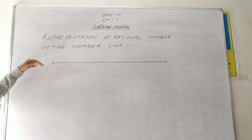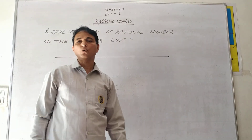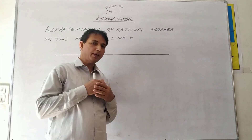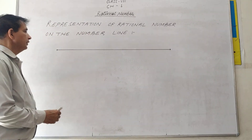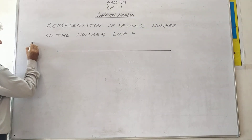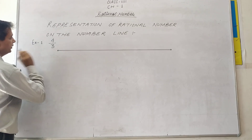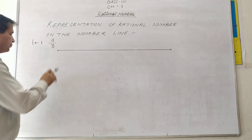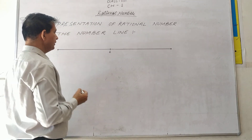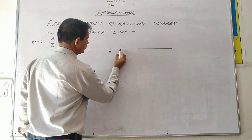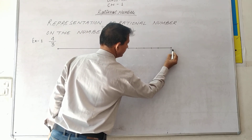Next topic: representation of rational numbers on the number line. You can show any rational number on a number line, whether it is positive or negative. For example, take the number 4 upon 3 — represent it on a number line. First, draw a number line, mark 0, and take equal intervals: 1, 2, 3, 4, 5, 6. The right side is the positive part and the left side is the negative part.